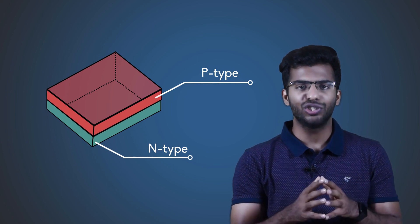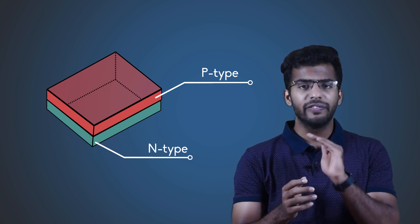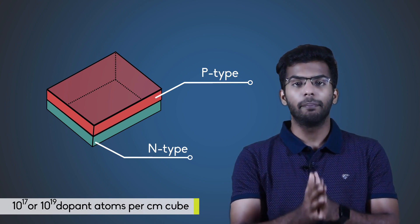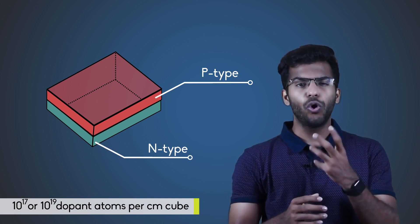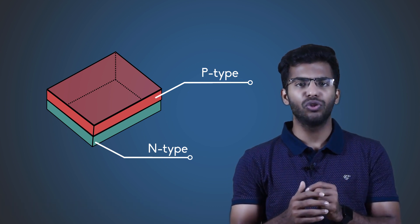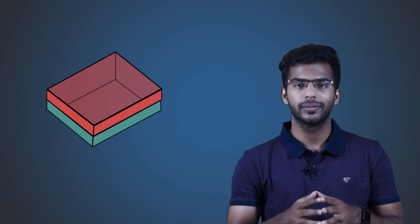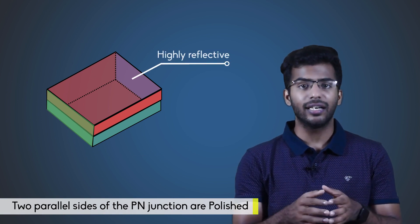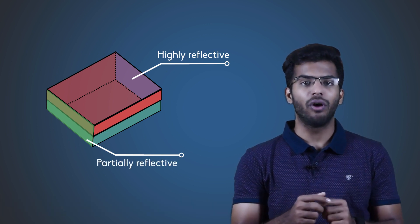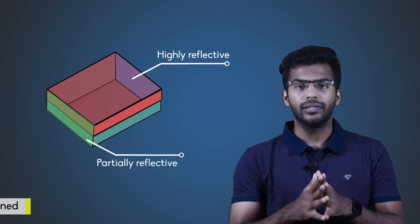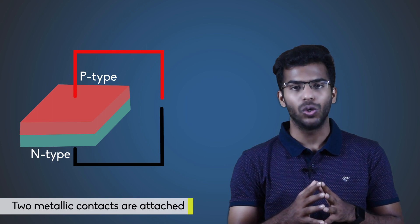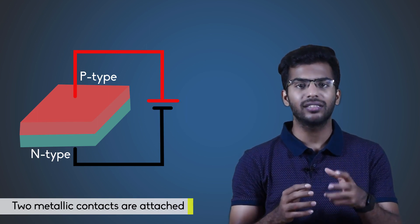A junction zone separates them, giving us a P-N junction. Both regions are heavily doped in the order of 10 to the power 17 or 10 to the power 19 dopant atoms per centimeter cube. The overall size of the diode is very small, with the P-N junction in the order of 1 micrometer to 100 micrometers. Two parallel sides of the P-N junction are polished — one end made highly reflective and the other partially reflective — acting as reflecting mirrors. The other two ends are roughened to avoid reflections. Two metallic contacts are attached at the top and bottom to apply forward bias voltage.